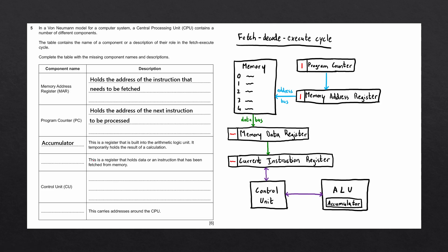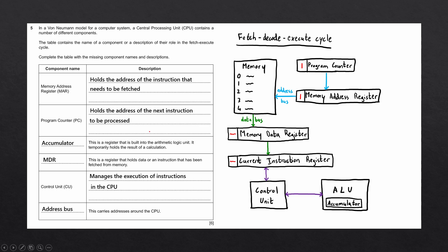The next entry describes a register that holds data or an instruction just fetched from memory — that is the memory data register, or MDR. The control unit manages the execution of instructions within the CPU. The last description states this carries addresses around the CPU — something that moves addresses from one place to another is a bus. Since addresses are specified, the answer is the address bus. And that completes both parts of the question.